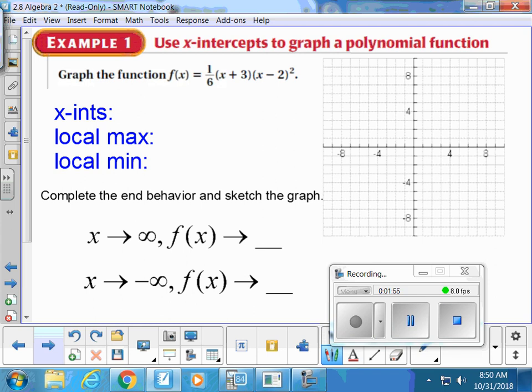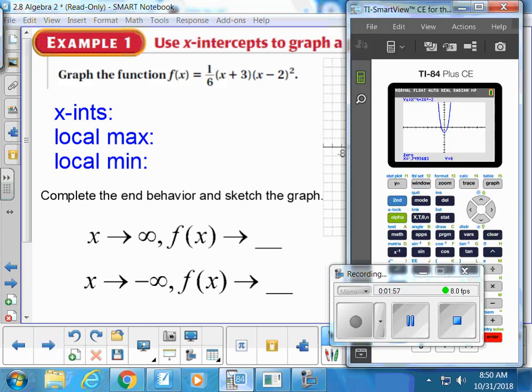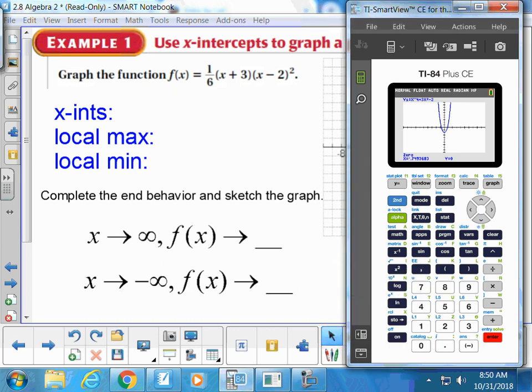We're now going to head to our graphing calculators and stick this equation in. This equation is a little bit different because it's not in standard form but that's okay. If I would foil this all the way out, the degree would be 3. There'd be 3 binomials: x plus 3, x minus 2, and another x minus 2.